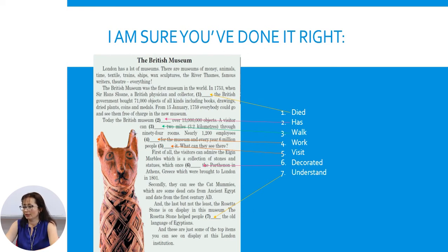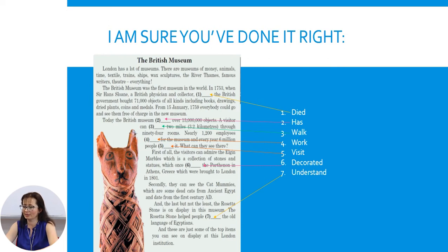What can they see there? First of all, visitors can admire the Elgin Marbles, a collection of stones and statues which once decorated the Parthenon in Athens, Greece, brought to London in 1801. And the last answer: the Rosetta Stone helped people understand the old language of Egyptians.